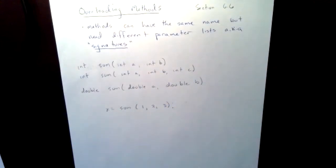For example, if I said x equals sum, parentheses, 1, 2, 3, I know which sum it's going to use. It's going to use the second one that has the parameter list, int A, int B, and int C, and it's going to return an int. So overloading methods.